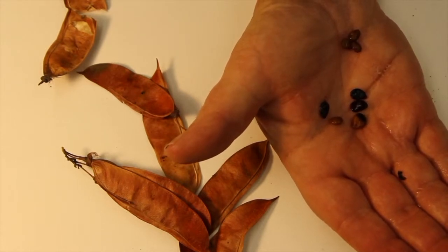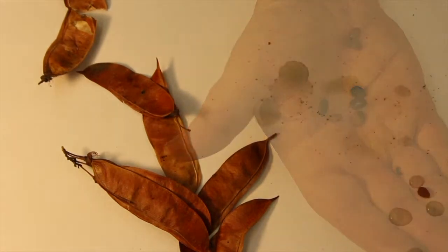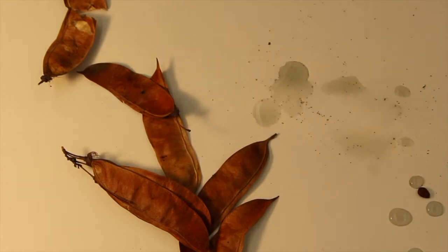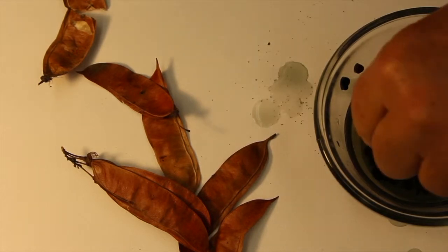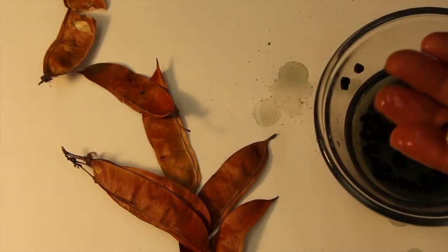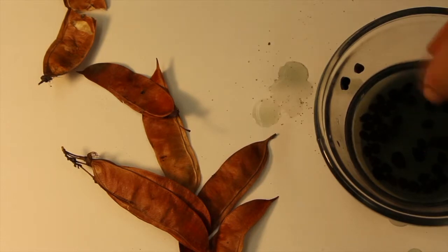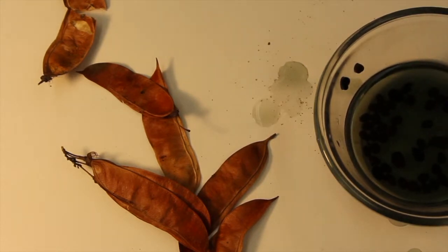But redbud is a very cautious plant. It wants more of a delay just to make sure that spring is starting to happen and it's time to germinate. So what it does is it won't germinate unless there's a cold period. It insists on swelling up like this and then sitting in a cold temperature, usually in the high 30s, for about two months before it'll germinate.